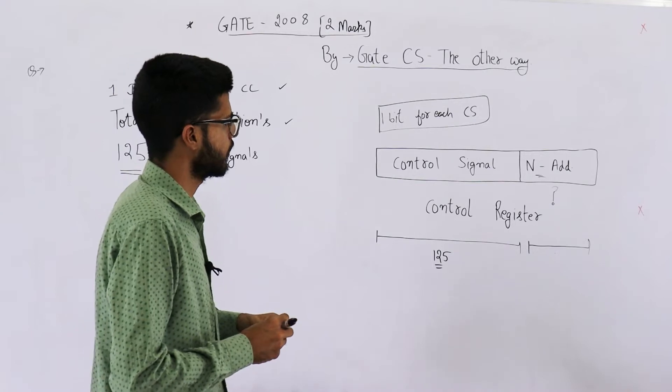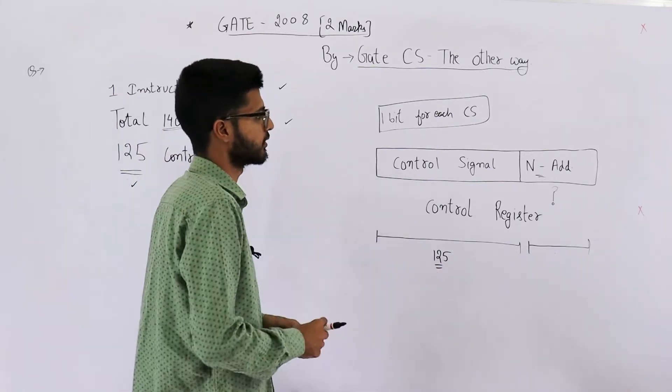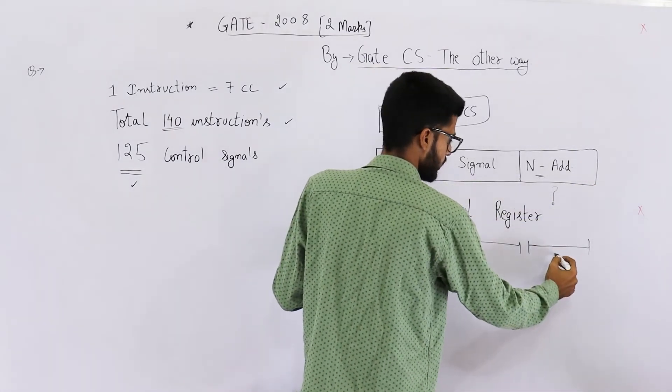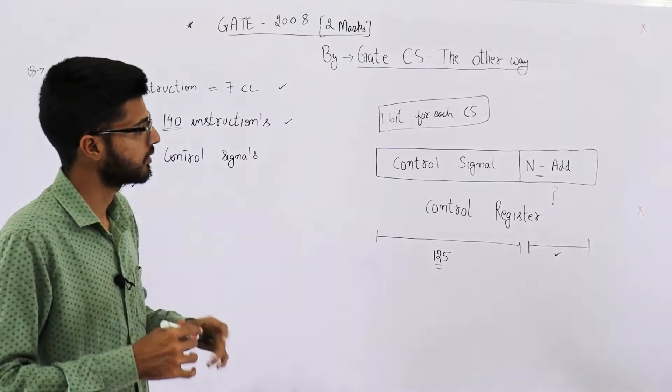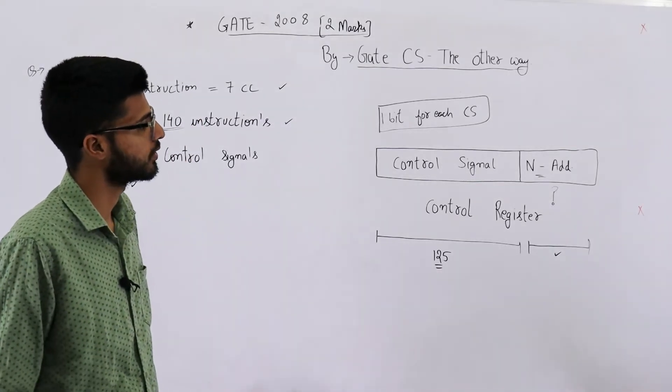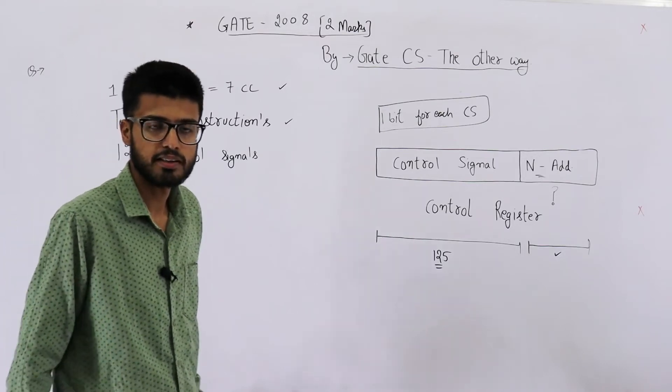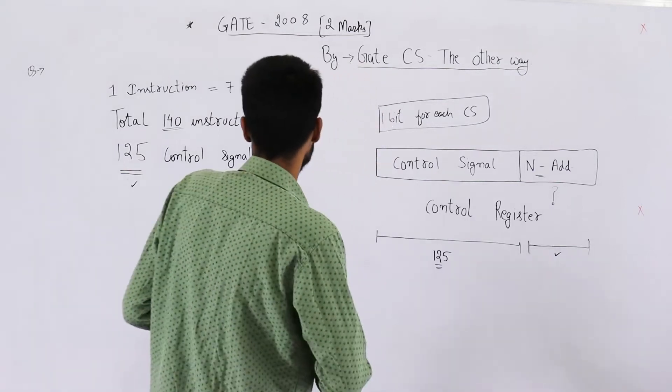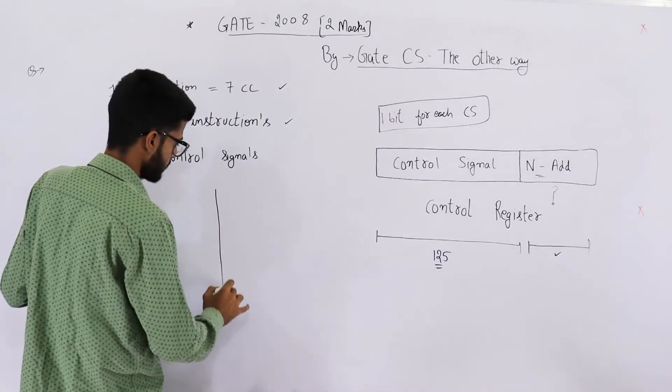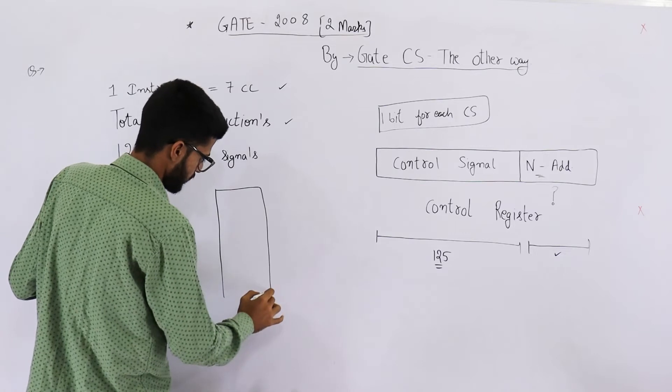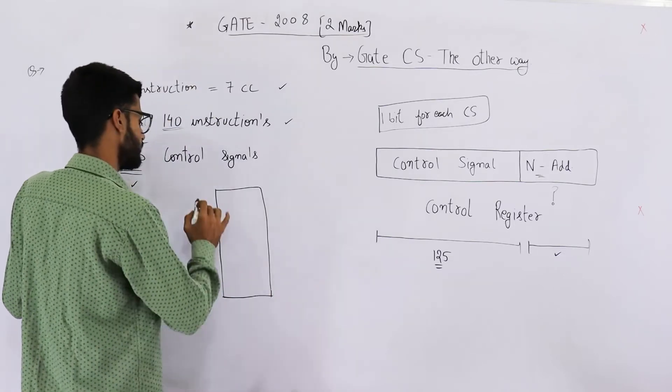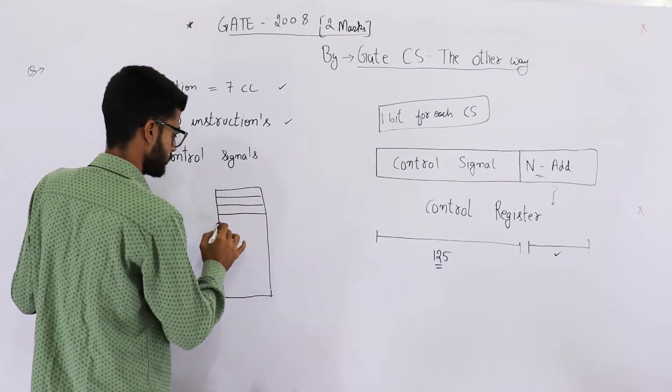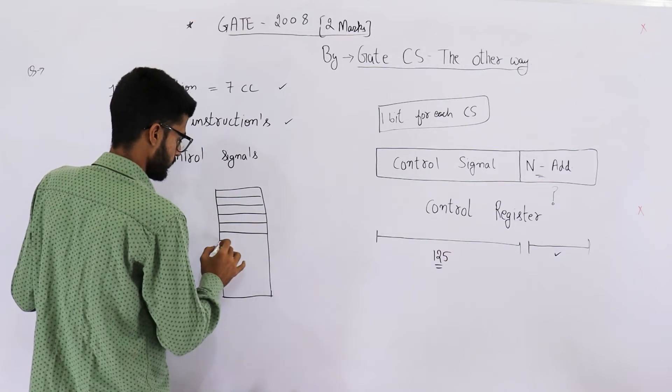Anyways, the options make it more clear that we need to consider only these two parts. So now this part is 125 bits and we need to find the length of entire control word. That means we also need this value. So next address, how many bits is it going to take? For finding this, we need to know how many addresses are there in total in the control memory, how many locations are there. So this is your control memory where all the micro instructions are saved. If we somehow get to know how many instructions in total we are saving in this memory, we will get our answer.